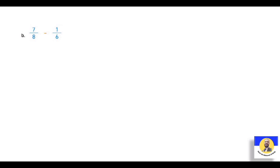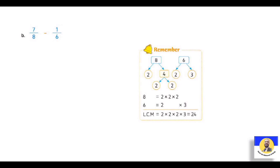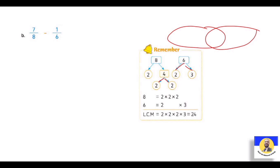الـ question التالي: 7 over 8 minus 1 over 6. برضو زي ما عملنا - أروح أجيب الـ LCM للـ 8 والـ 6. الـ eight: 2 × 4 = 2 × 2 × 2. والـ six: 2 × 3. بالـ Venn diagram: الـ 2 مشتركة في النص، وهنا الـ 4 تبع الـ eight، وهنا الـ 3 تبع الـ six. يبقى LCM = 4 × 2 × 3 = eight × 3 = twenty-four. أغير الـ 8 والـ 6 خليهم twenty-four. الـ 8 بقت 24: عملنا × 3، يبقى 7 × 3 = twenty-one over twenty-four. الـ 6 بقت 24: عملنا × 4، يبقى 1 × 4 = four over twenty-four. والـ answer: 21 - 4 = seventeen over twenty-four.